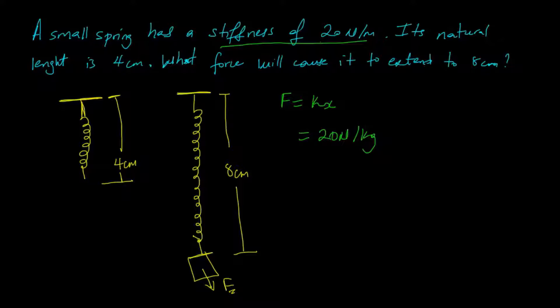So our extension, let's do this separately. Extension x is equal to the final length, which is 8 centimeters minus the original length, which is 4 centimeters. And that works out to be 4 centimeters.